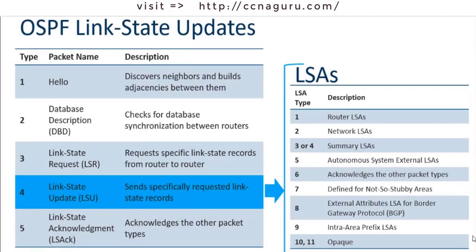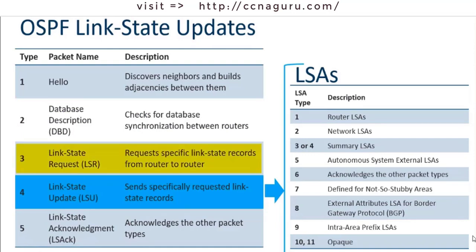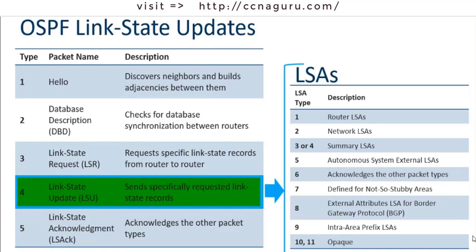Now let's jump into OSPF link state updates, and first revisit the Type 2 Database Description packet, which is an abbreviated list of the sending router's link state database. This is important because another router can then send a request saying it saw your database and needs more information about a specific item. The link state update is then sent in response to that request, or as an OSPF-generated message about a new network or something that has changed.